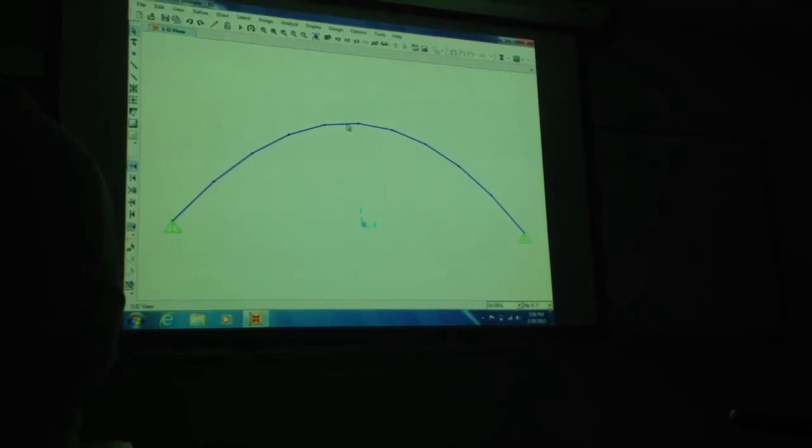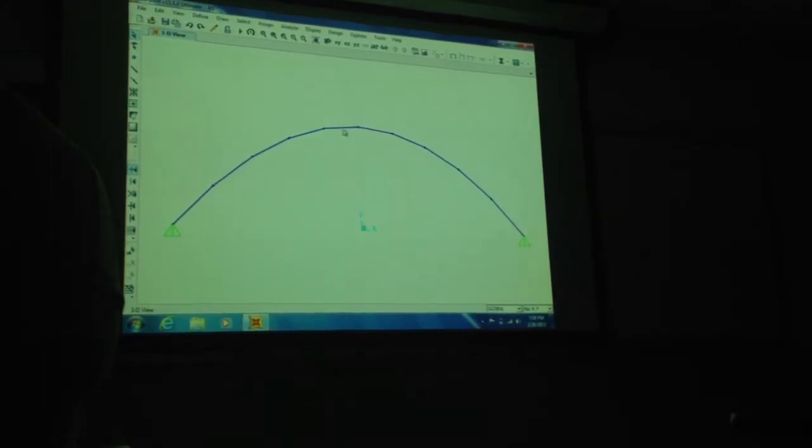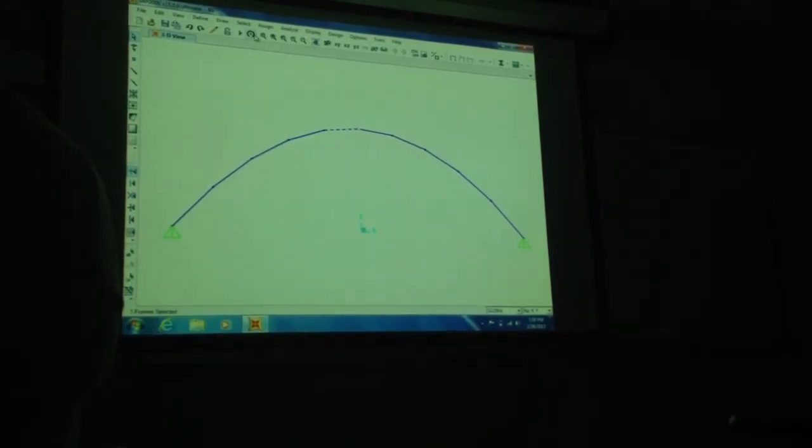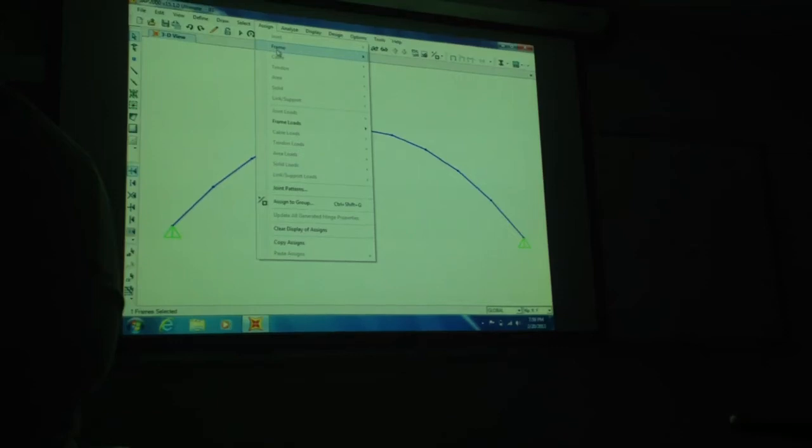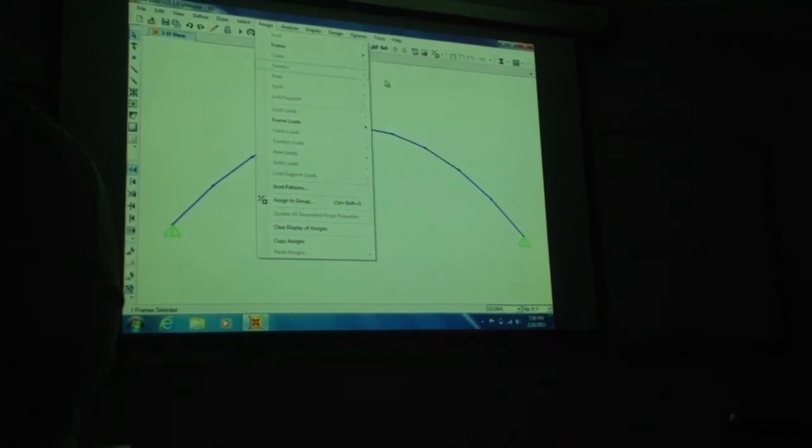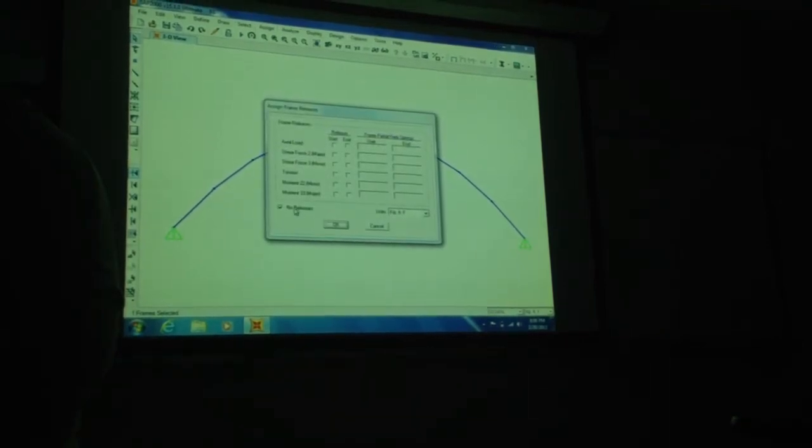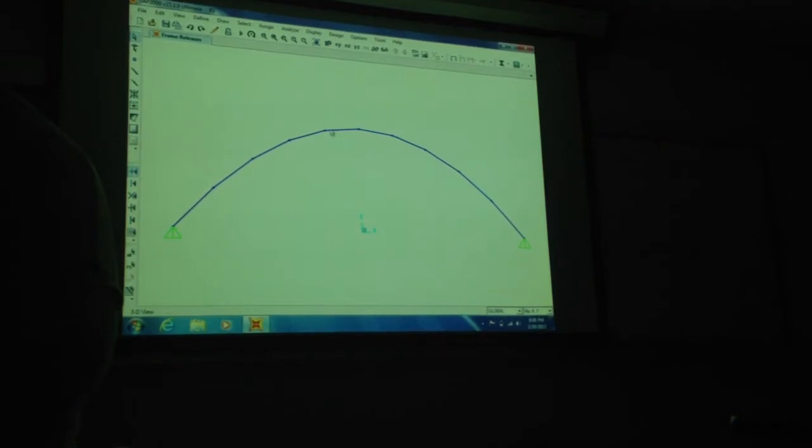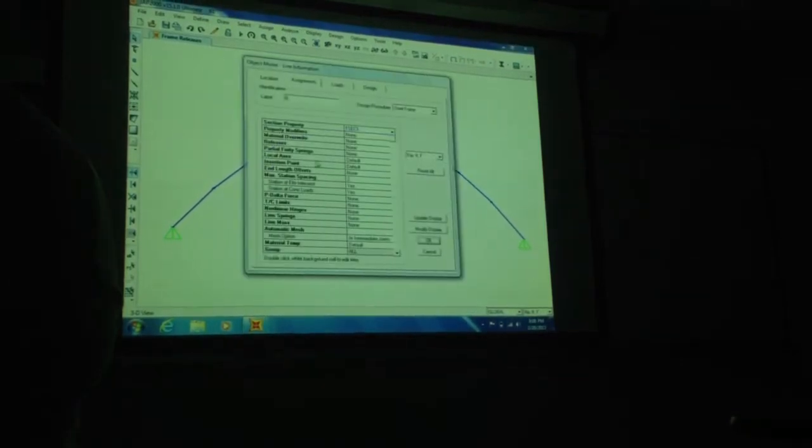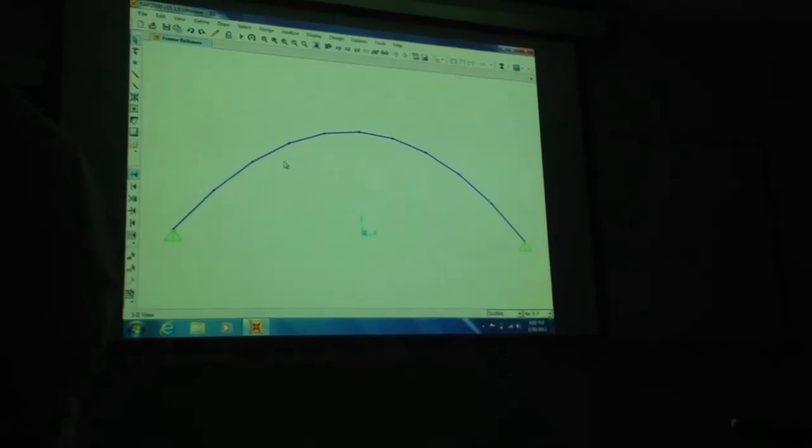This, if we right click on it, then we release the end. We'll make this a 2 pin arch instead of 3. I'm going to click on the member. I'm here so it's one joint selected. Then I say assign frame releases. And I say here no releases. So it's going to override over there.